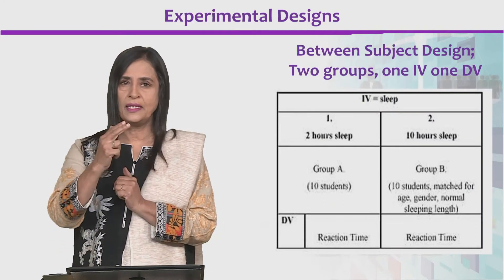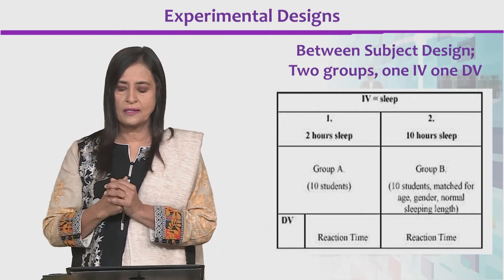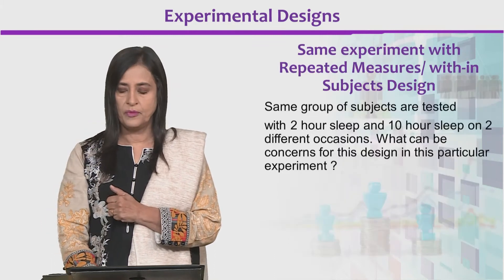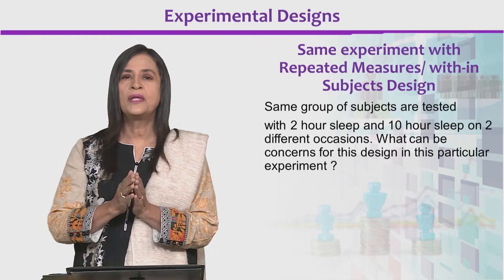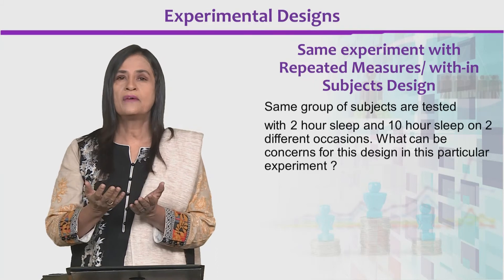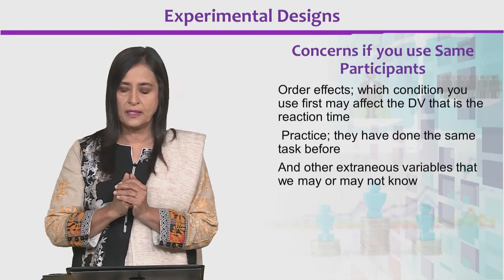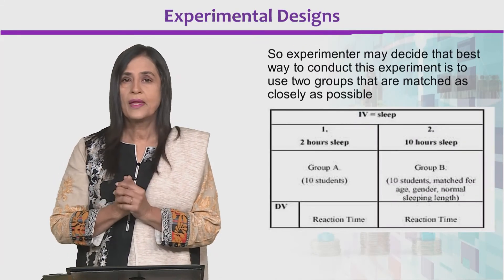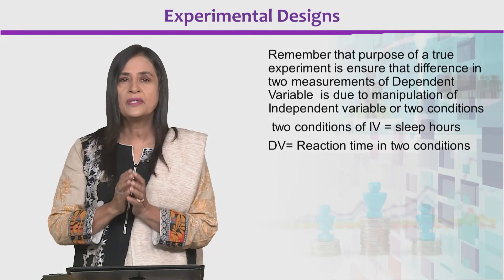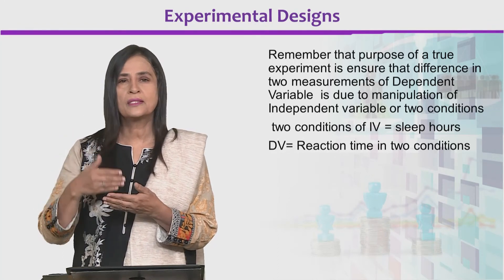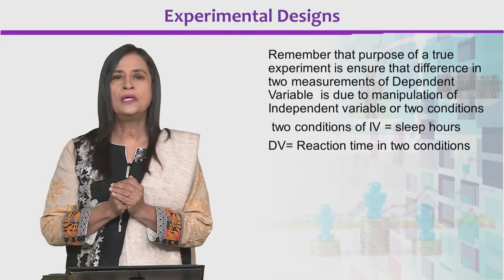In a between-subjects design with two groups, one independent variable and one dependent variable: one group gets two hours of sleep, the other gets ten hours of sleep. Group A has ten students, Group B has ten students, and the dependent variable is reaction time in both groups. If we used the same subjects, they would first be tested with two hours sleep then again with ten hours sleep — but having already completed the reaction time task, there may be problems with practice and fatigue effects. So the experimenter decides to use the between-subjects design. We must remember the purpose of a good experiment is to ensure that the independent variable is causing the difference in the dependent variable between two groups, and not any other confounding effects.